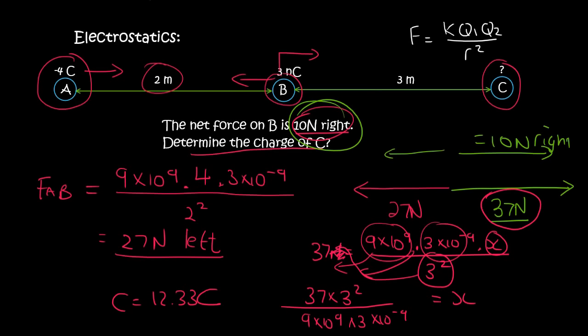Now, we can actually tell whether C is positive or negative. If C causes B to move to the right, it means that C is attracting B, and so C must be negative, because B is already positive and opposites attract. So C has a charge of minus 12.33 coulombs.